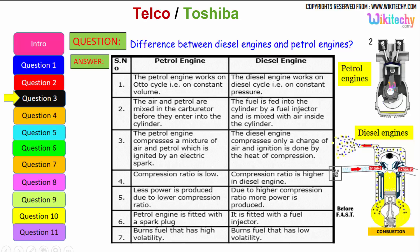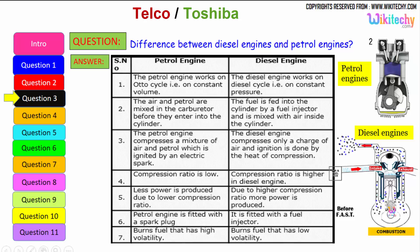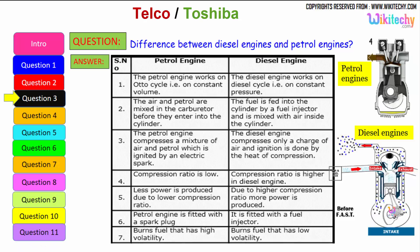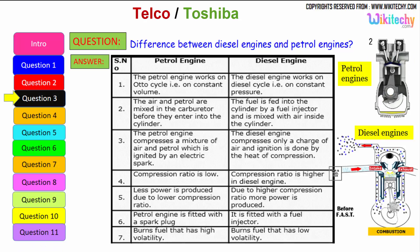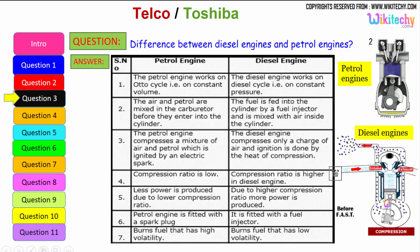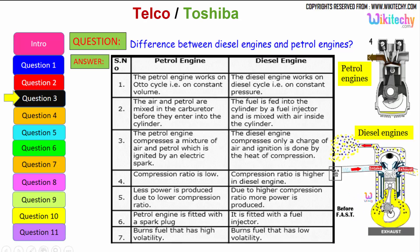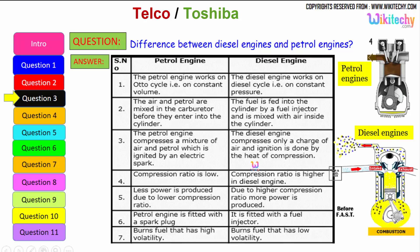The petrol engine is fitted with a spark plug, whereas the diesel engine is fitted with a fuel injector. The petrol engine burns fuel with high volatility — petrol is highly volatile — whereas the diesel engine burns low volatility liquid as well. These are some of the differences between the petrol engine and the diesel engine.